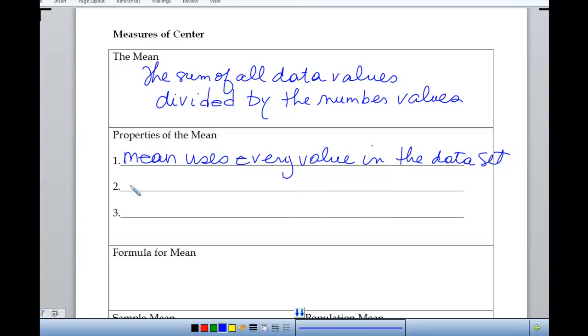The first thing I want to note is that the mean uses every value in the data set. And as we go through these different measures of center today, you'll see that not all of the measures of center are going to use all of the values. So this one does use all of the values. Also, the mean tends to be consistent. If I send all of you out and tell you to get data from the same population, and everybody comes back with their own sample, and you all calculate the mean, the means won't necessarily all be exactly the same, but they would be more consistent than some of the other data values. So it tends to be very consistent, which is why it's one of the measures that we use most often.